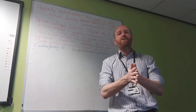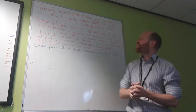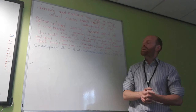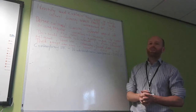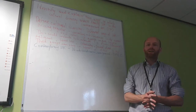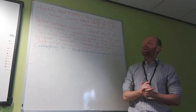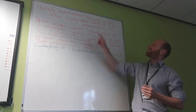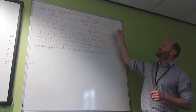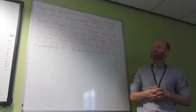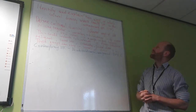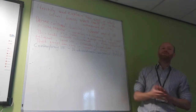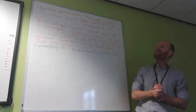Welcome to this sociology video. Sociology G672, OCR AS level exam, sociology of the family. We're looking at a question: identify and explain two ways in which cultural diversity affects family life in the contemporary UK — 17 marks.